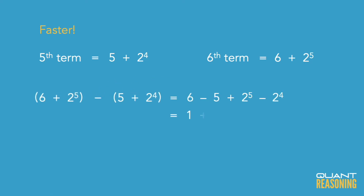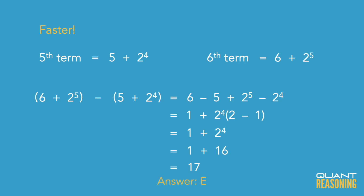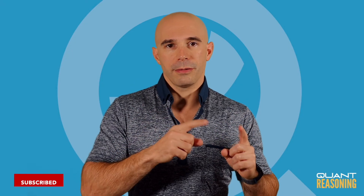Comparing 2 to the 4th and 2 to the 5th — that's 16 and 32 — the difference there is 16. So the sixth term is bigger by 1 for the first reason and bigger by 16 for the second reason, meaning it's 17 greater than the preceding term.